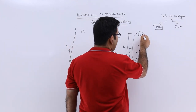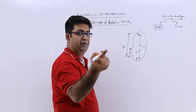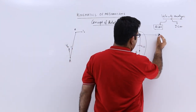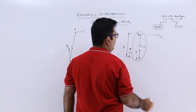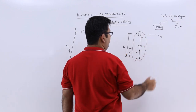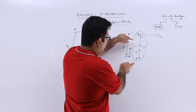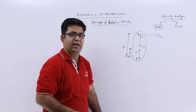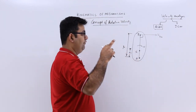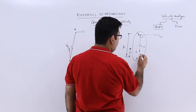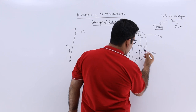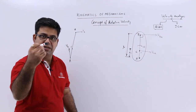The velocity of point B with respect to point A — denoted as VBA — will be perpendicular to the line joining A and B. Similarly, the velocity of point C with respect to point A will also be perpendicular to the line joining C and A.